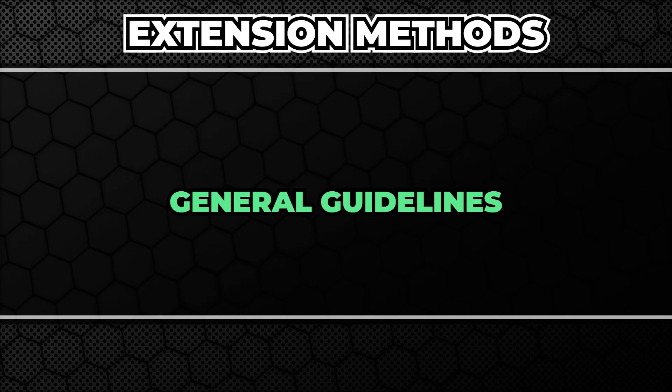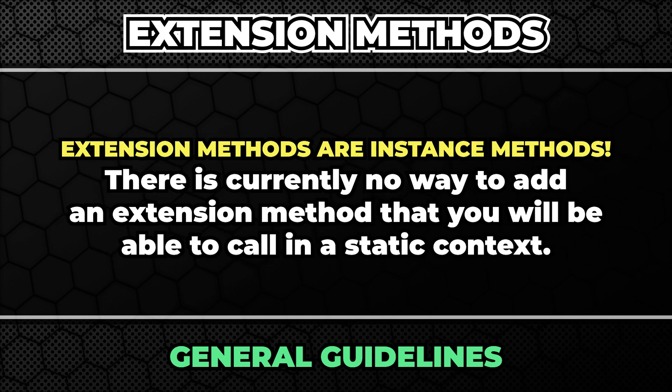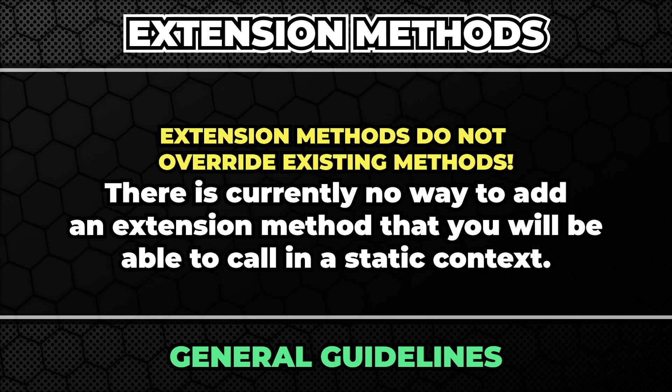Now let's have a look at some general guidelines. The first one is pretty obvious: if you have access to a class, it's always better to extend it directly rather than add extension methods to it. This will allow you to keep all the logic in one place, making debugging and maintenance much easier. Currently there is no way to add extension methods to static classes — so for example you cannot extend the Input class to directly give you the mouse position in the workspace. And the third, very important point: if a type already contains a method with a given name and the same signature, your extension method will simply be ignored. I hope you learned something useful. Have a fantastic day, love you and bye-bye.